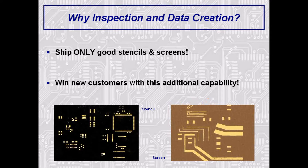One of the main reasons inspection is needed is to keep your current customers happy by shipping quality stencils every time. Nothing is worse than losing a good customer to a competitor because a defective stencil was shipped. A single bad aperture on a single stencil can cause extraordinary problems and costs — in some actual situations, the price has even been millions of dollars.